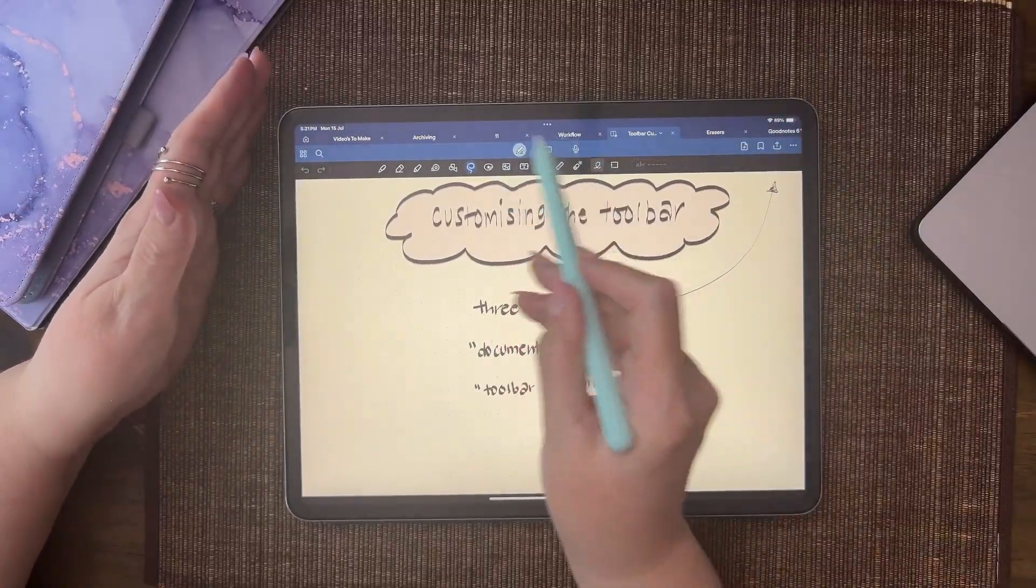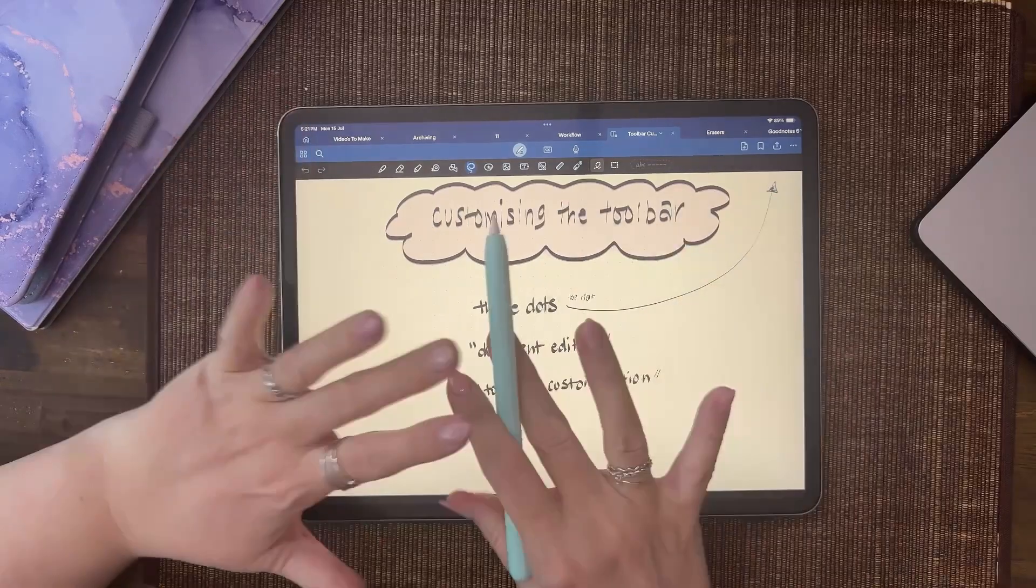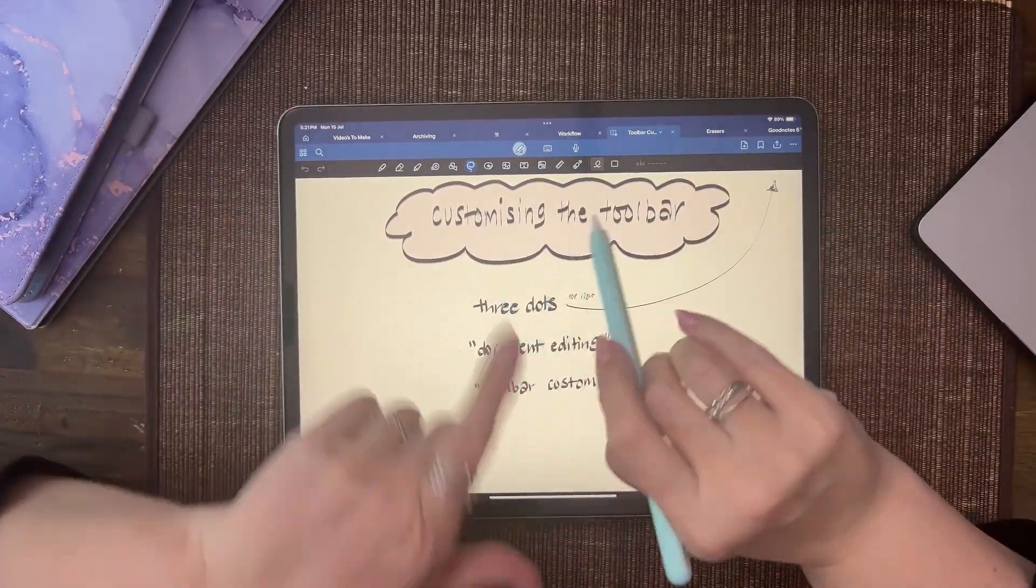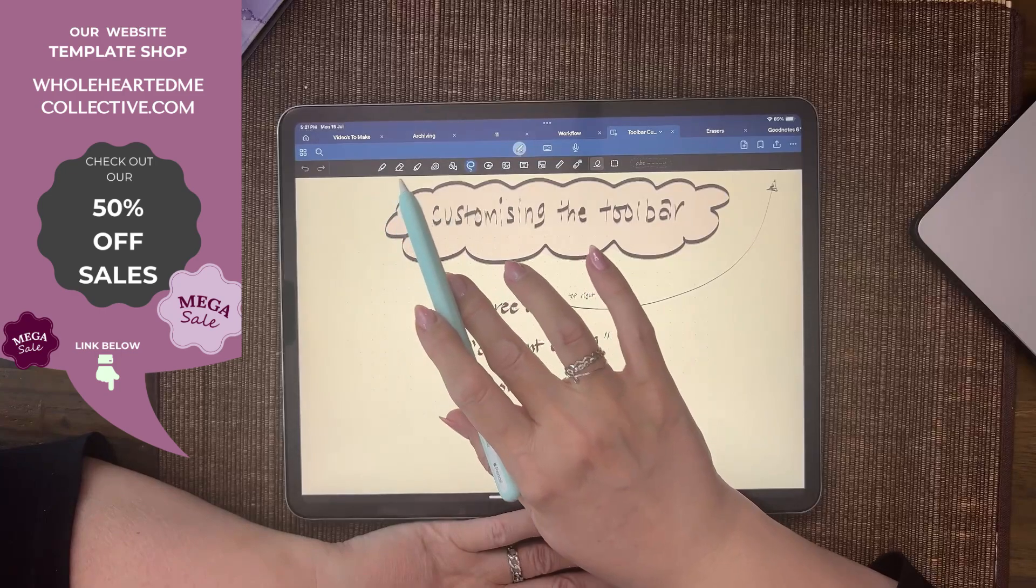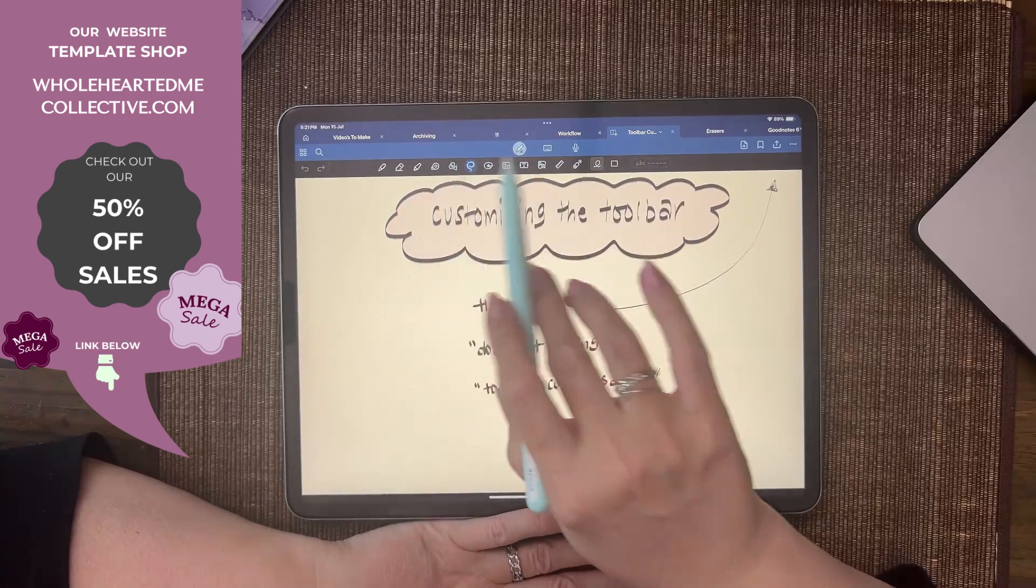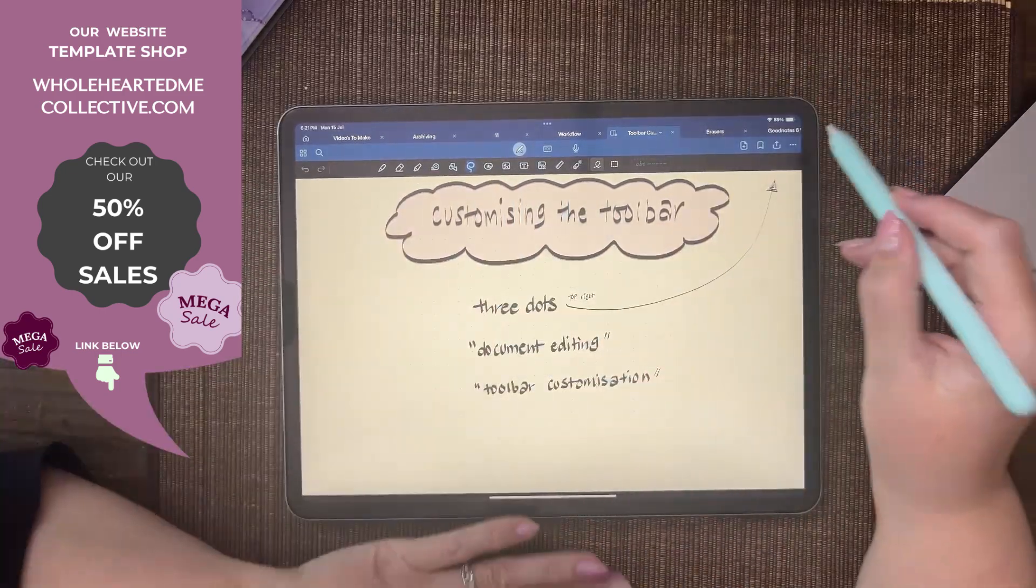Then you can go, 'Okay, now I know where everything's at. I'm going to reorganize them again.' If you want them all, I actually like them all.